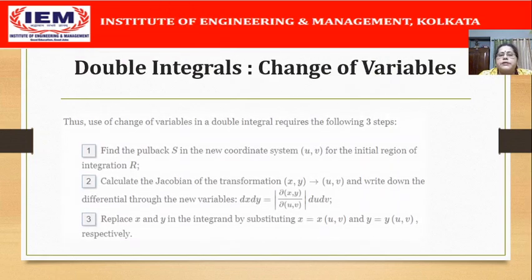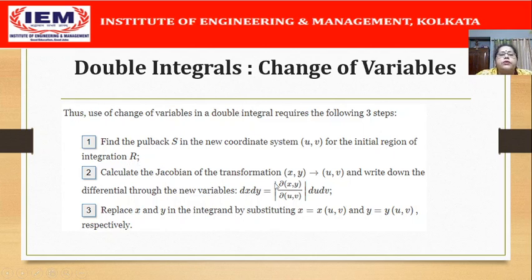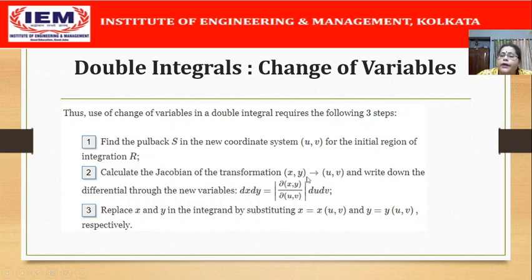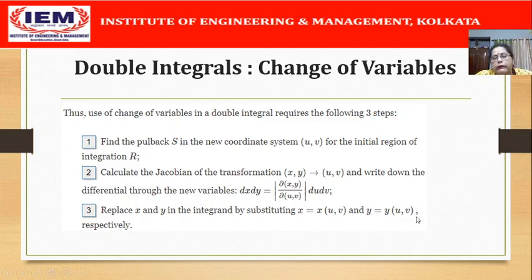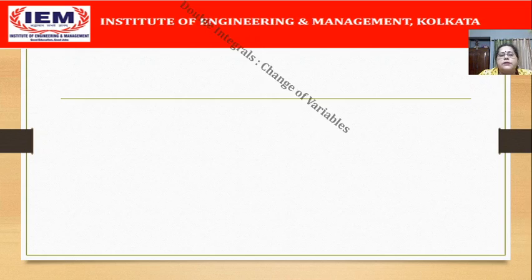Before we start with problems, let us see the steps to be followed when using the concept of change of variables for evaluating a double integral. The first step is to find the pullback region S in the new coordinate system uv for the initial region of integration R. The second step is to calculate the Jacobian ∂(x,y)/∂(u,v) and replace dx dy by the modulus of ∂(x,y)/∂(u,v) du dv. The third step is to replace x and y in the integrand by substituting the transformation equations. Once we do this we are ready to evaluate the double integral in the new coordinate system.